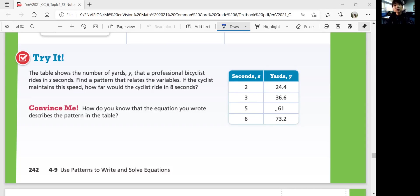So what's the pattern? 2 times what? 3 times what? 5 times what? 6 times what? Figure out a pattern. 24.4 divided by 2 is 12.2. 36.6 divided by 3 is 12.2. 61 divided by 5, so you can divide yards by S to see if there is a proportional relationship. And that's 12.2 as well. So 2 times 12.2 is 24.4. And 3, 5, 6, if you multiply them by 12.2, you get these numbers.